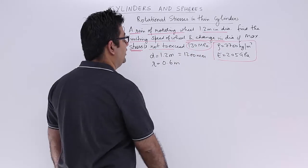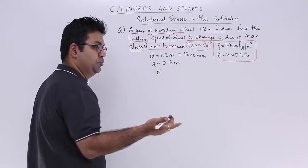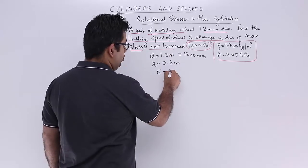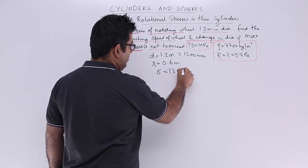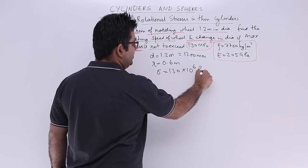The maximum stress is basically your hoop stress, so that is 130 MPa, or 130×10^6 Pascals.